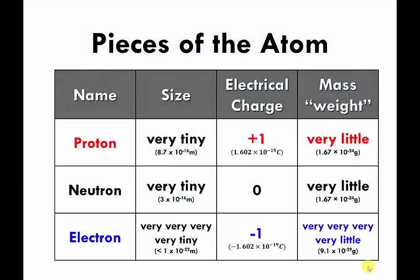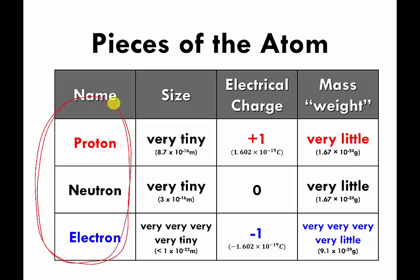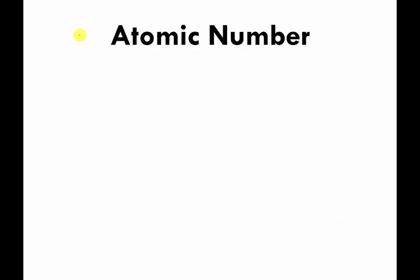As you remember from the previous video, atoms are made of three different particles or three different parts. This video is going to be devoted exclusively to talking about protons, so we're going to ignore neutrons and electrons for the moment. I want to talk about something called atomic number, which is related to protons.